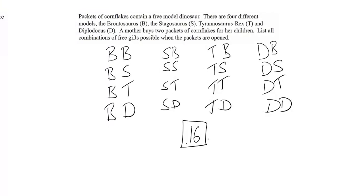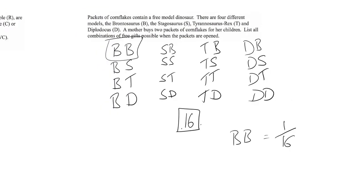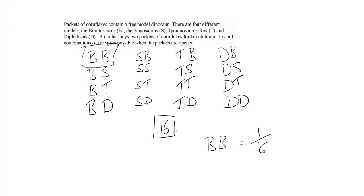Why is this important for probability? Because we might be asked a follow-up question: what is the probability of getting two brontosauruses? There's only one of those outcomes out of the 16 that is that particular thing, so the probability of getting BB is going to be 1 out of 16. However, maybe there's a more challenging question: what are the chances of getting two dinosaurs exactly the same from both packets?